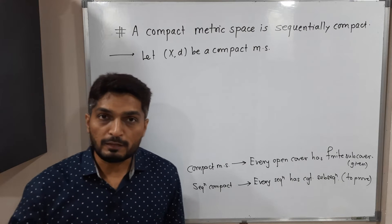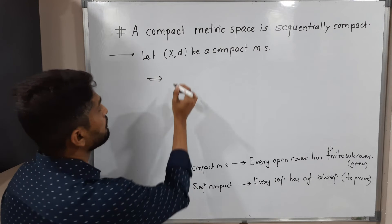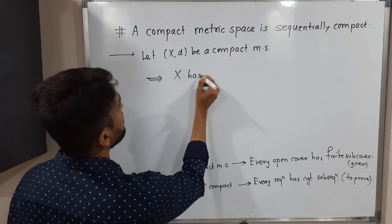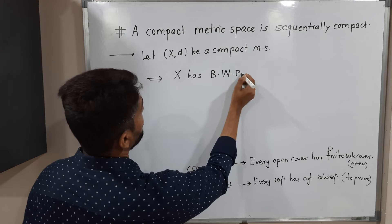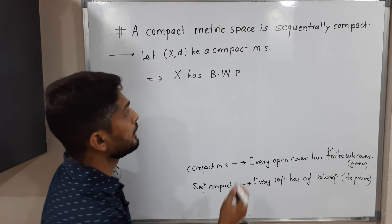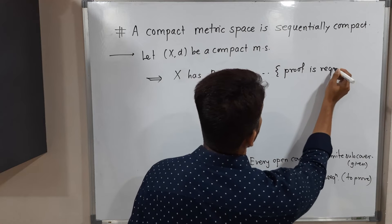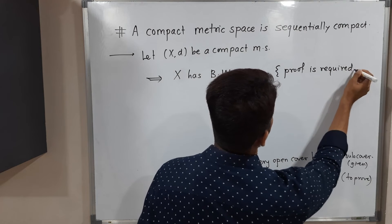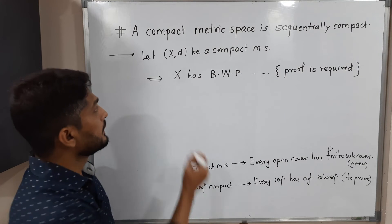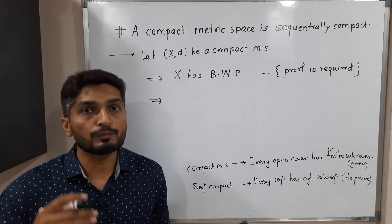In a previous video I have already proved that if the metric space is compact, it has the Bolzano-Weierstrass Property (BWP). So this implies X has BWP — this part we have already proved, so I'm not writing the proof here again. The proof is required here, so you can watch that video and write the proof. See, if X has BWP then it is sequentially compact — this part also we have done in our previous video.